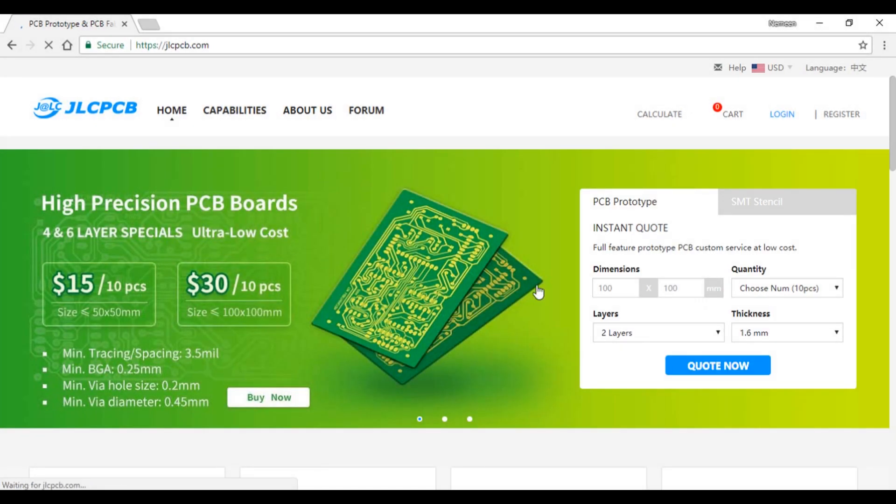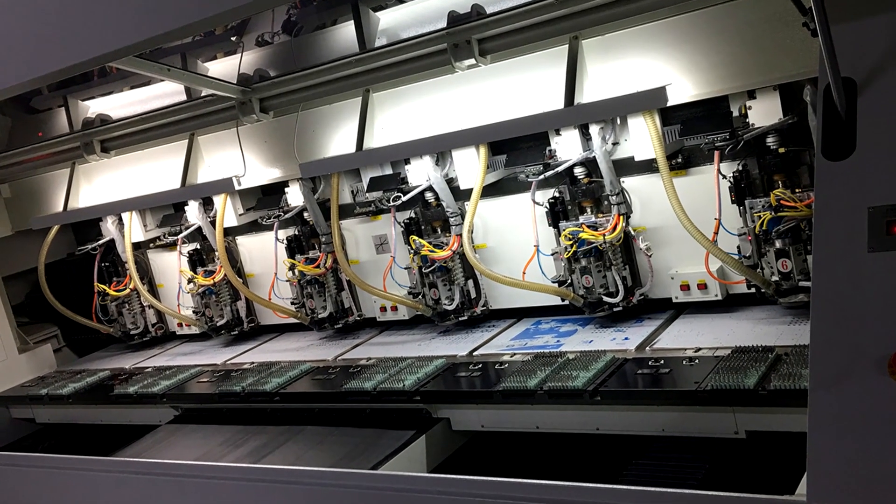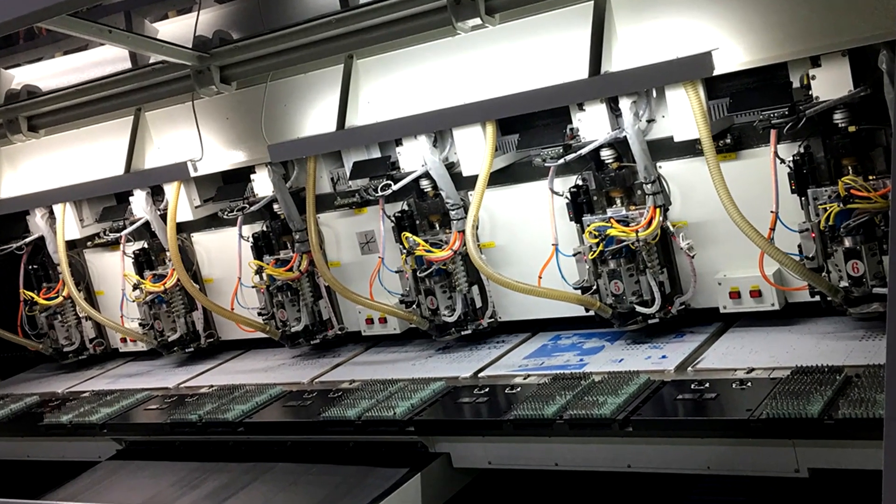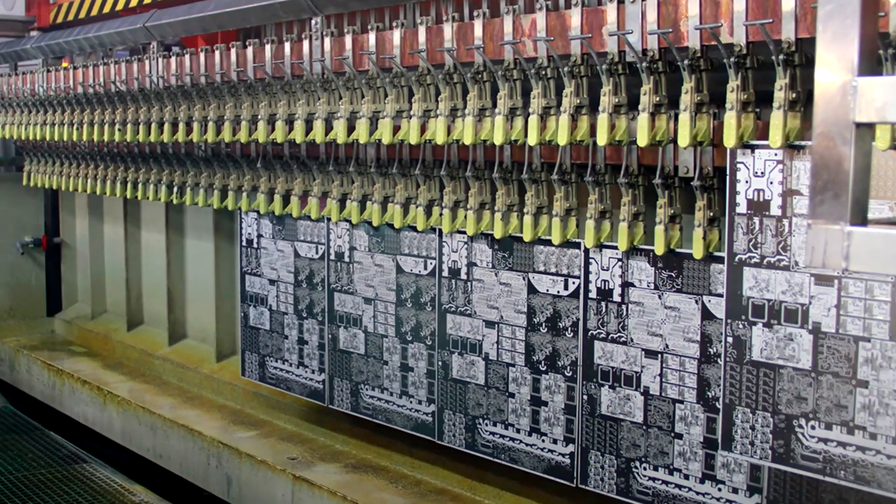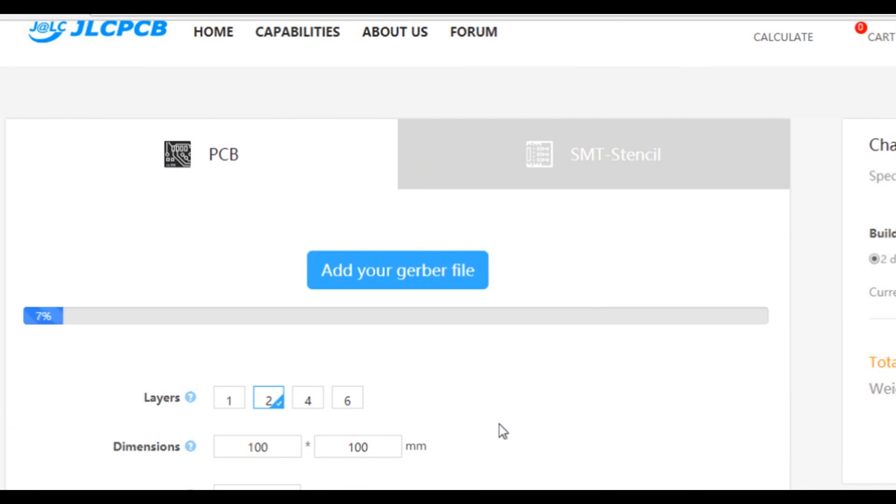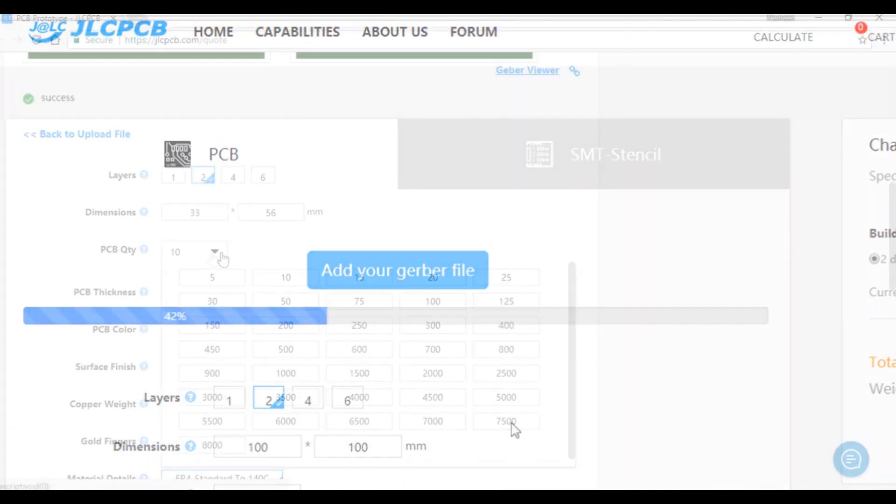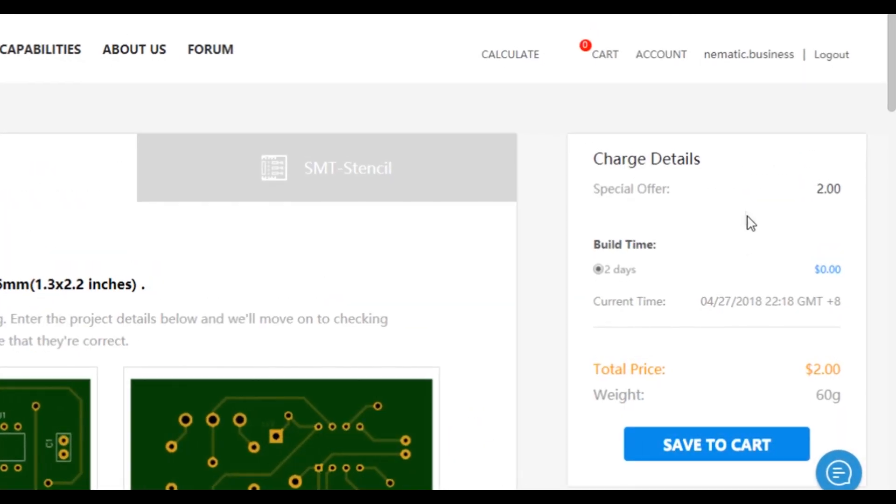This video is sponsored by JLCPCB. They are known for high-quality PCB prototype manufacturing. They can not only provide you 2-layer PCB but also 4-layer and 6-layer PCB as well. Upload your Gerber files to get high-quality and professional-looking PCBs. The main benefit for opting this option is the insanely low prices, only 2 dollars for the 2-layered PCB.